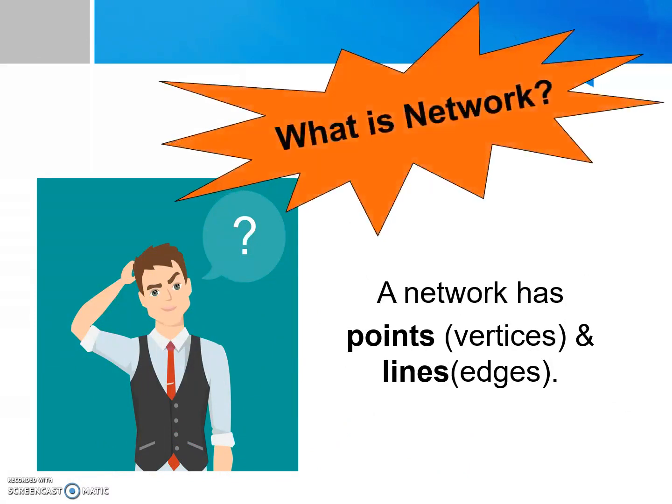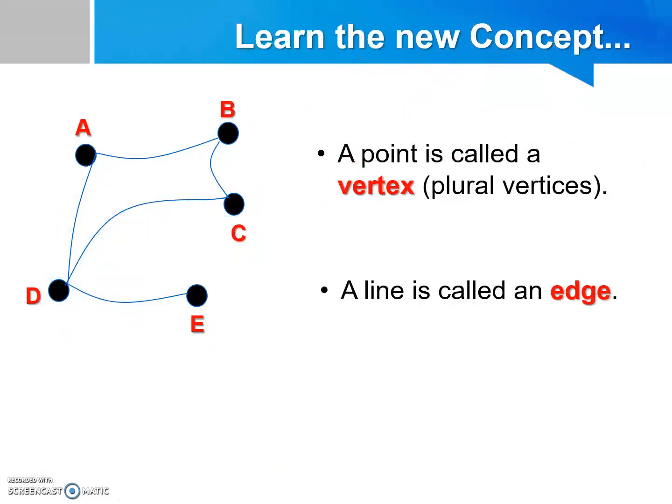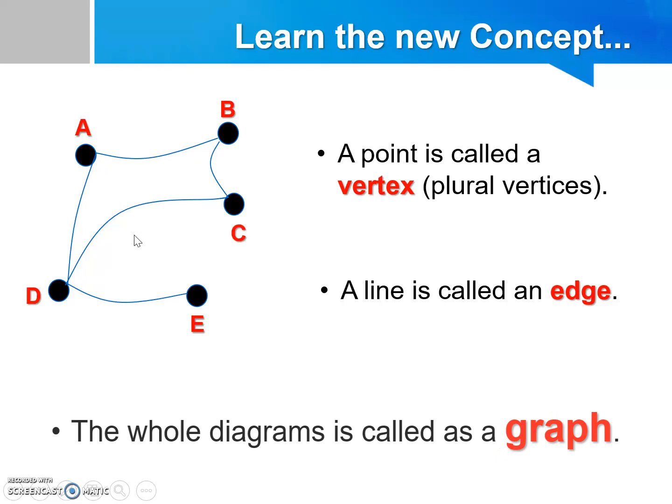So what is a network? A network consists of points and lines where the lines connect all the points to form a network. As we can see from the diagram on the left, there are points A, B, C, D, and E. A point is also called a vertex or a node, and there are lines to connect or link all these points together. The line can also be known as an edge.